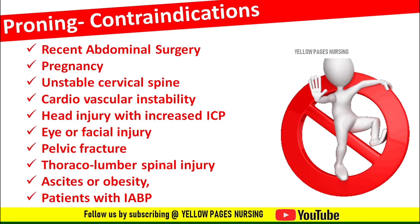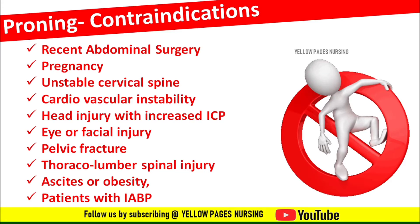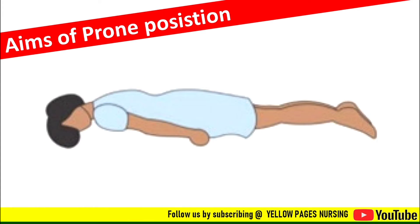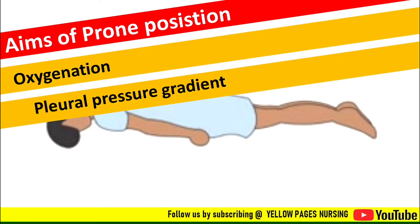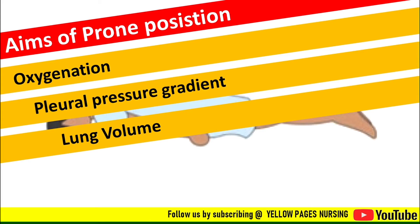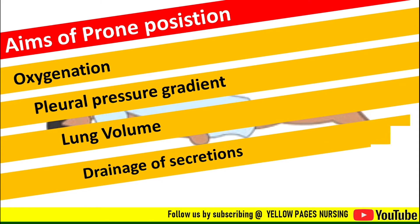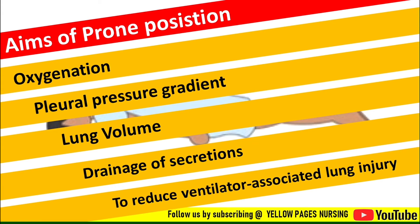The aims of prone positioning are: to improve oxygenation and respiratory mechanics, to homogenize the pleural pressure gradient, alveolar inflation, and ventilation distribution, to increase lung volume and reduce the amount of atelectatic regions, to facilitate the drainage of secretions, and to reduce ventilator-associated lung injury.